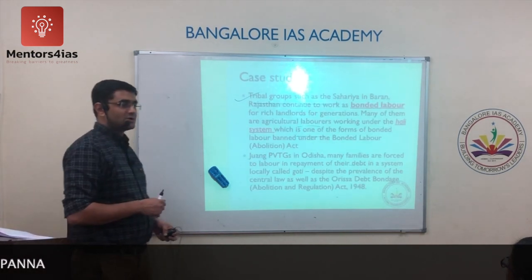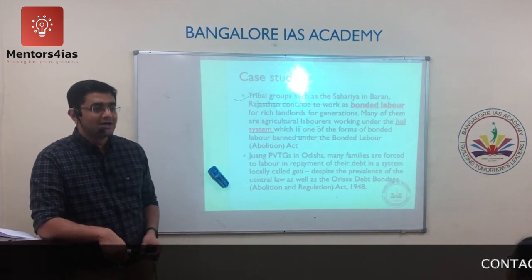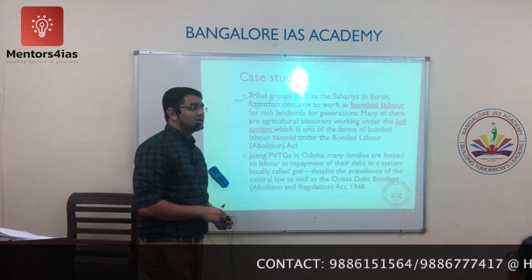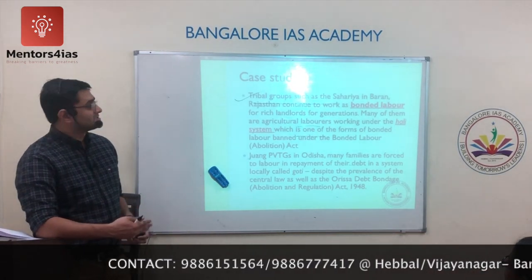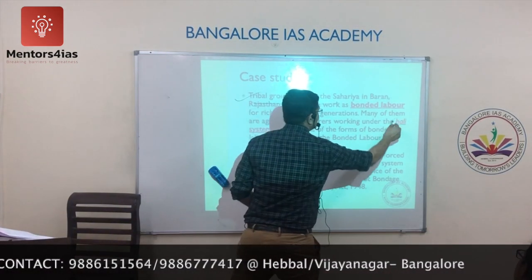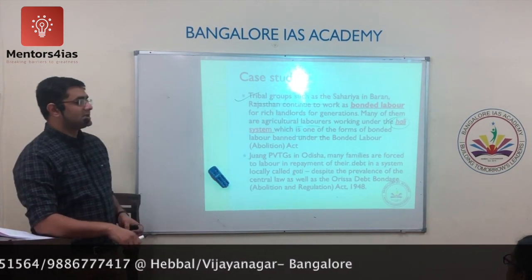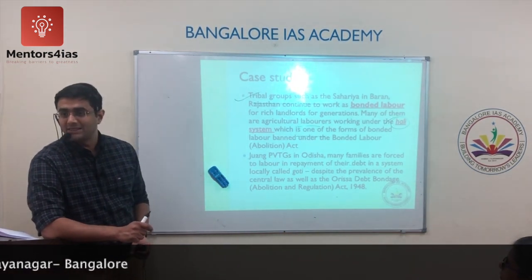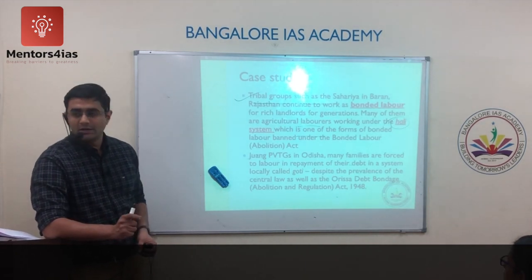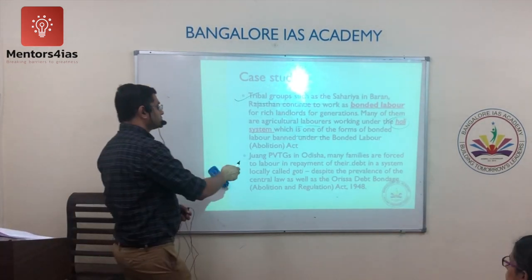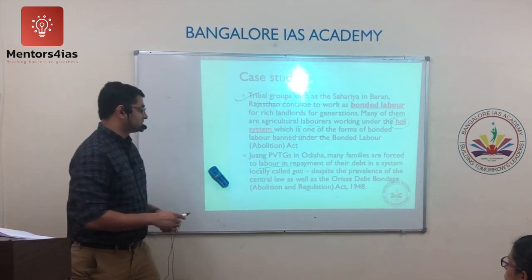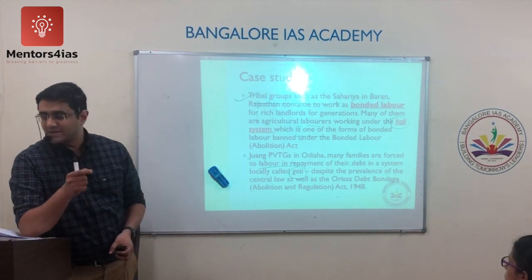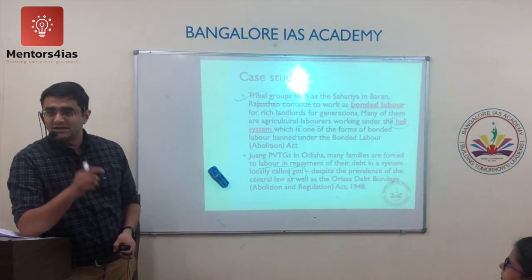Some of these tribes are still working as bonded laborers. For example, the Sahariya tribe in Baran, Rajasthan, still works as agricultural bonded laborers under a system known as the Hali system. Similarly, the Juang tribe in Odisha — also a PVTG — is forced to provide labor for repayment of debt under a system called Goatee. Despite the presence of law, due to lack of education and empowerment they remain bound by these systems.